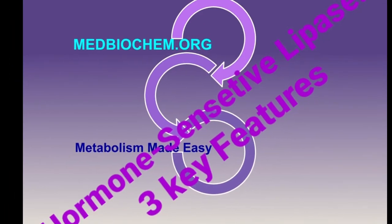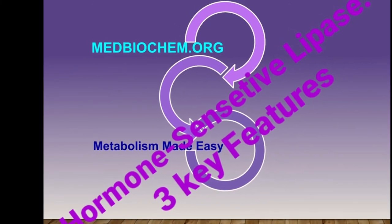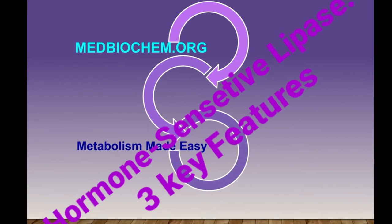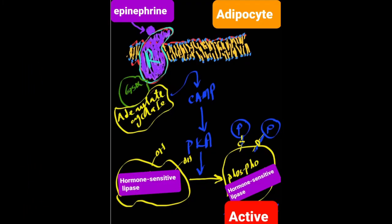There are three key features of hormone sensitive lipase. Hormone sensitive lipase is an intracellular triacylglycerol lipase present in adipose tissue. The second key feature is that it is the enzyme responsible for the lipolysis of triacylglycerol or TAGs stored in adipose tissue during a fasting state.